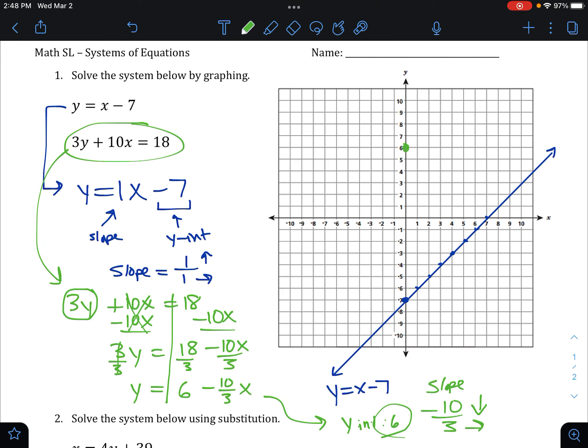So on the y-axis, we find 6. And then we count down 10 from 6 and right 3. So down 10, right 3, and we're going to put a dot right there. And that may be it. We may not get any other dots on here because if we go down 10 more, I'm off the grid.